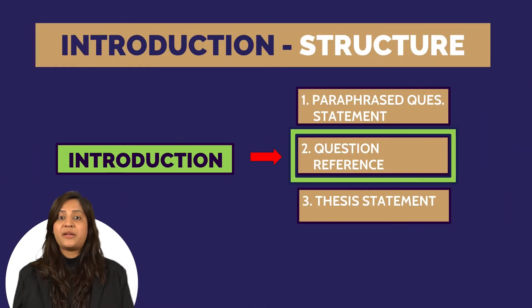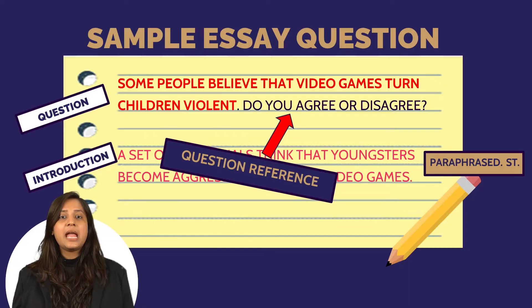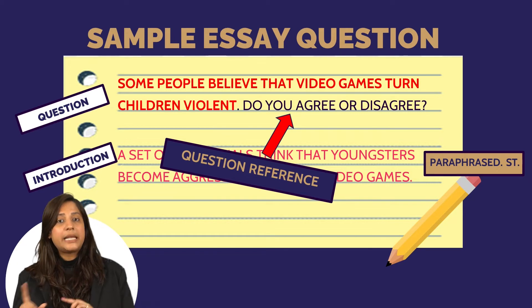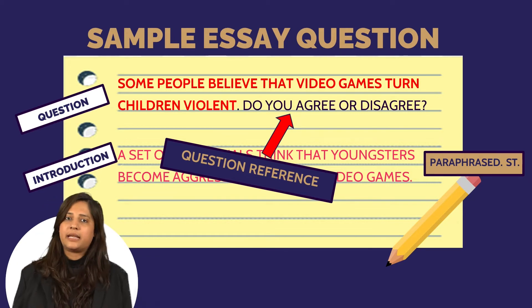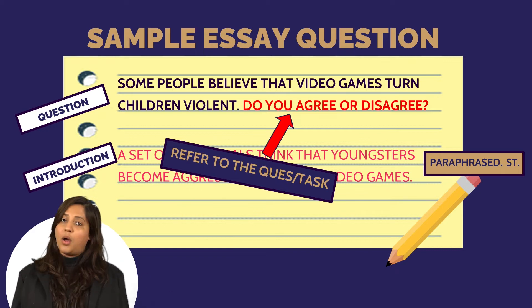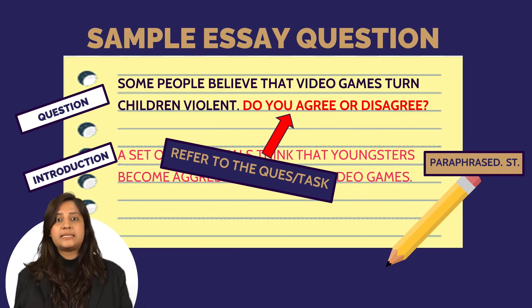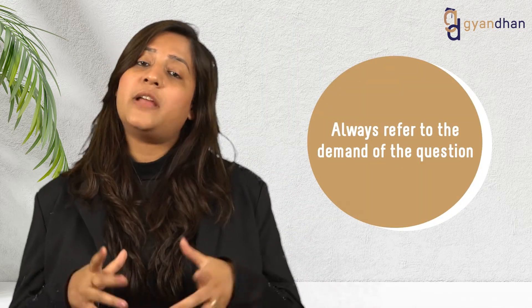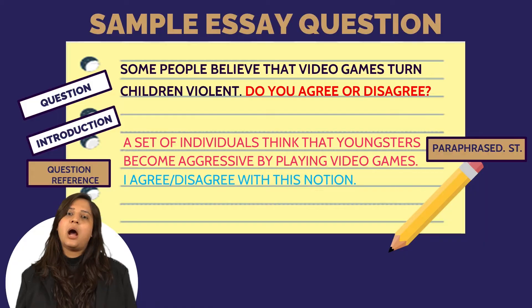Next is the question reference. The question reference will be determined by the task given in the question. Here the question asks whether we agree or disagree, so our task is to state what we believe — which side are we on — and build up on that information in the next paragraph. Always refer to the demand, or the task, of the question.